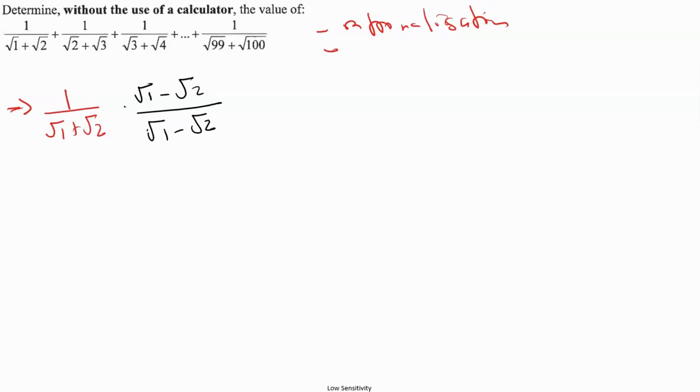And when we do this, what do we get? The numerator will be root 1 minus root 2. Then for the denominator, square root of 1 plus square root of 2 multiply by square root of 1 minus square root of 2.